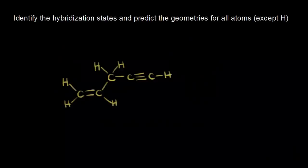Now that we understand hybridization states, let's do a couple of examples. We're going to identify the hybridization states and predict the geometries for all the atoms in this molecule except for hydrogen.